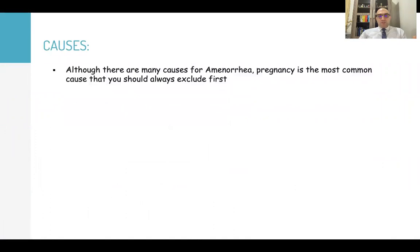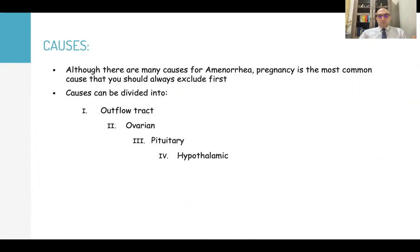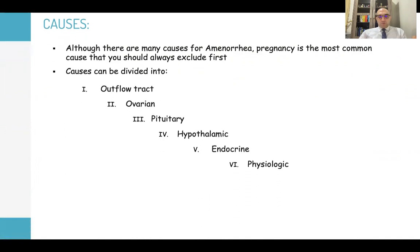Causes of amenorrhea: there are many causes, but pregnancy is the most common cause which you must exclude first. Causes can be divided into outflow tract causes, ovarian causes, pituitary causes, hypothalamic causes, and endocrine and physiologic causes.